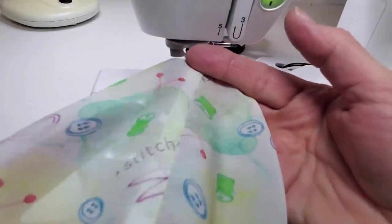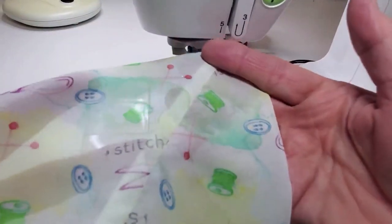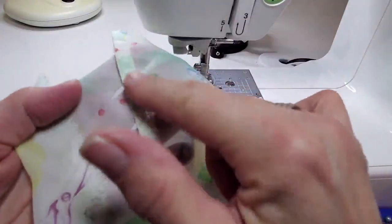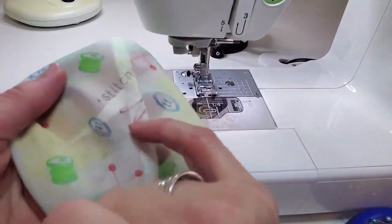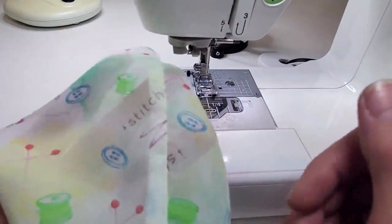After a final press, that seam is beautifully finished from the outside and from the inside. The seam allowance is enclosed in that little seam, and from the outside, you don't see any serging or any other seam finish.